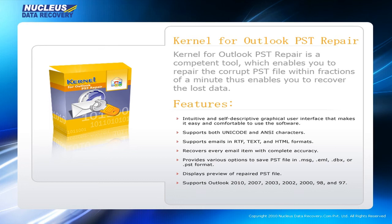Kernel for Outlook PST Repair provides various options to save the PST file in MSG, EML, DBX, or PST format. It displays a preview of the repaired PST file. It supports Outlook 2010, 2007, 2003, 2002, 2000, 98, and 97.